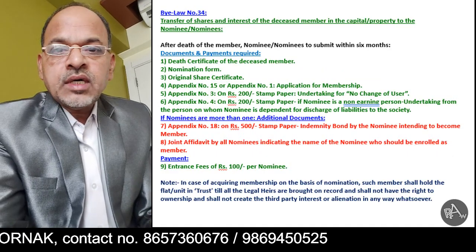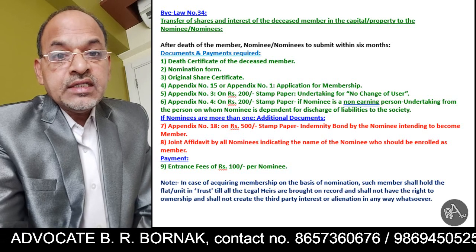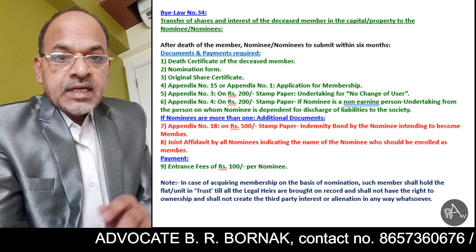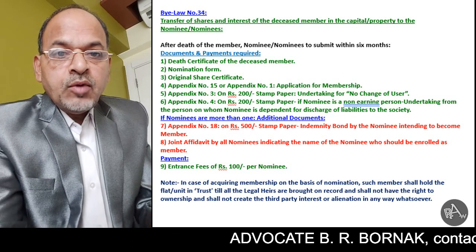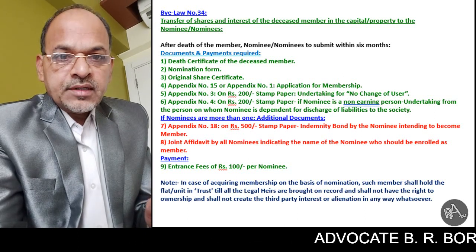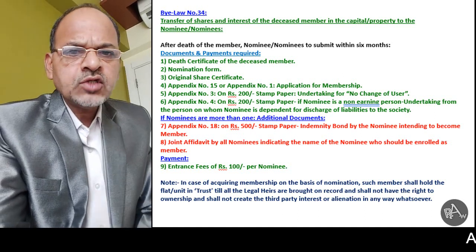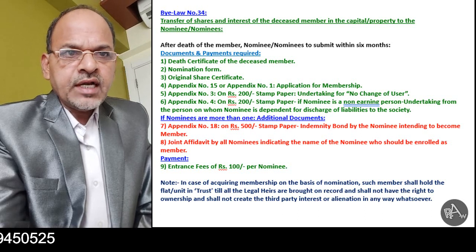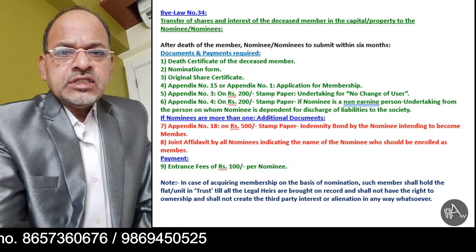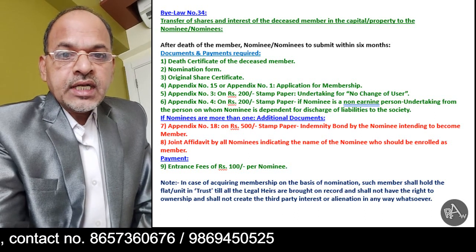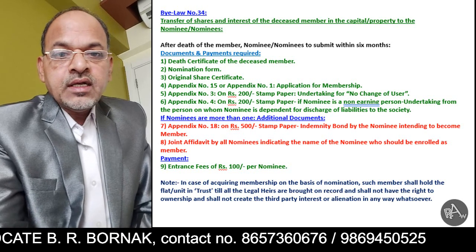Now let us see the important provision under bylaw number 34 — transfer of shares and interest of the deceased member in the capital property to the nominee or nominees. Means after death of a member, the shares and interest of the deceased member are transferred to the nominee on the basis of nomination done by the member or joint member. Now, which documents are required? As per bylaw number 34 and as provided in the list of prescribed forms — exact documents required and what payments are required to be made — I am going to explain.